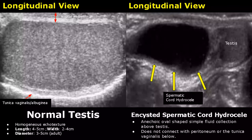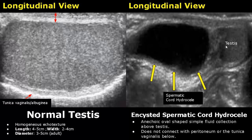An encysted spermatic cord hydrocele is a fluid collection above the testes. This fluid collection will not surround the testes and won't connect with the peritoneum above. It is usually anechoic and oval shaped.